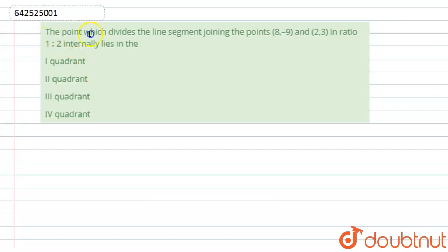Here we have given the point which divides the line segment joining the points (8, -9) and (2, 3) in the ratio 1:2 internally lies in—four options are given: first quadrant, second quadrant, third quadrant, and fourth quadrant.